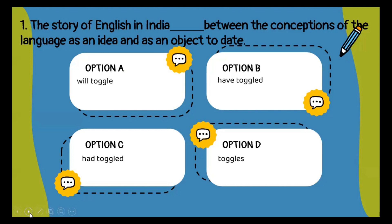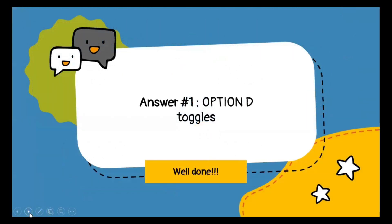The first type of question that you would get would be fill in the blank. The options are based on tenses. You have to fill in the blank: 'The story of English in India dash between the conceptions of the language as an idea and as an object to date.' Since the person is talking about the conception of an idea to date, it has to be in present tense. So the correct option is option D: toggles.